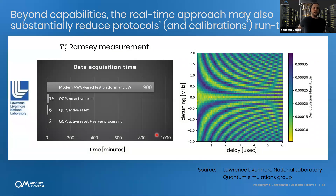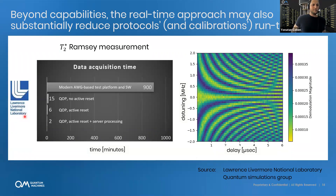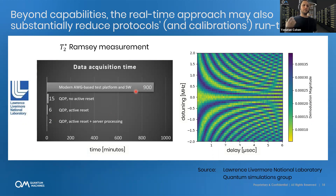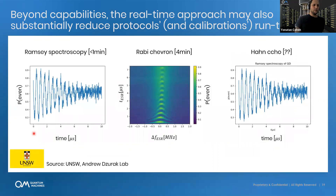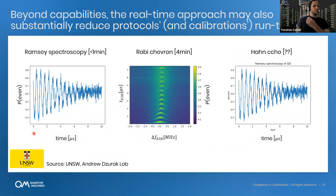You can see benefits of the platform even in relatively simple experiments. This is an example from the group at Lawrence Livermore National Labs — Jonathan Dubois's group — one of our customers. For a typical Ramsey measurement on their superconducting qubits, generating this graph typically takes them about 900 minutes with their old AWG-based test system. With the Quantum Orchestration Platform this drops by orders of magnitude to two minutes. Similarly, in spin qubits in silicon at UNSW — Professor Andrew Dzurak's group — a Rabi chevron measurement that used to take over an hour now takes about four minutes.